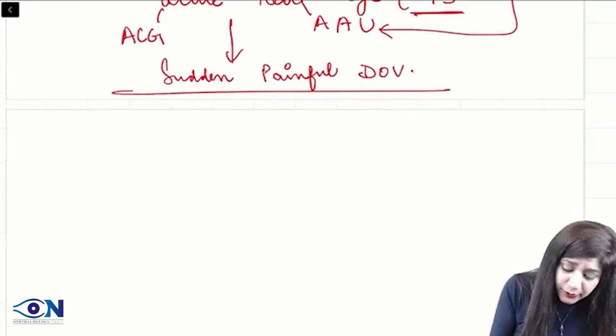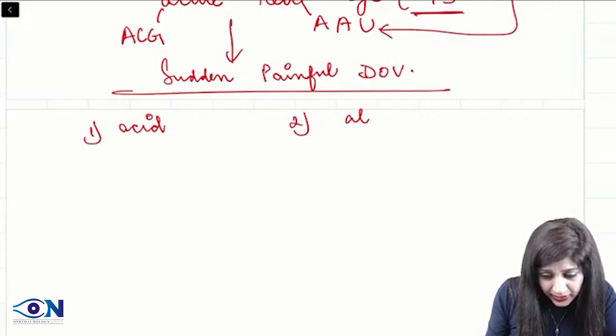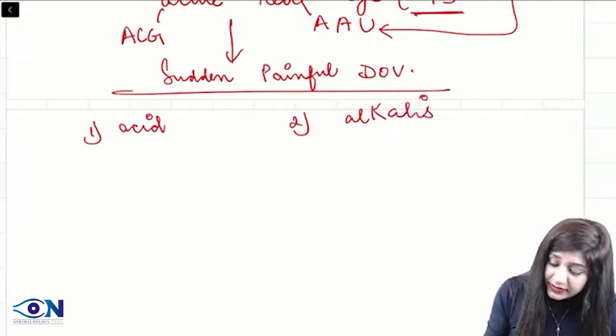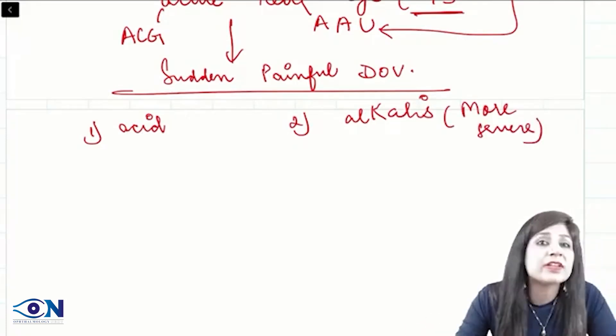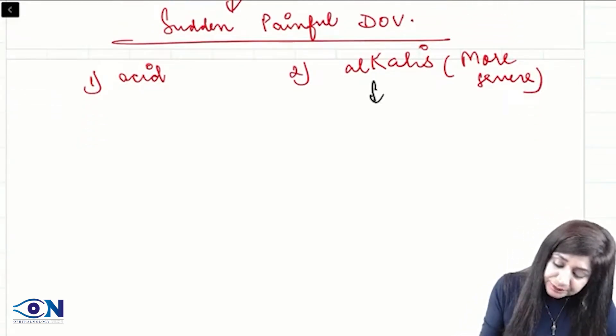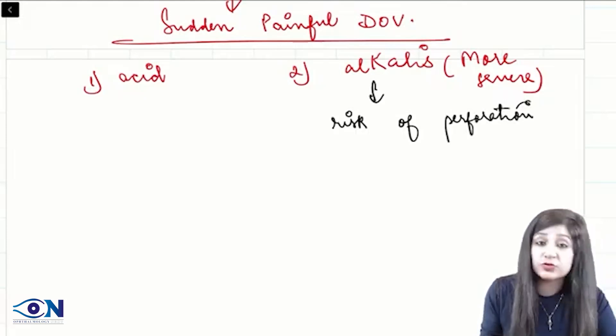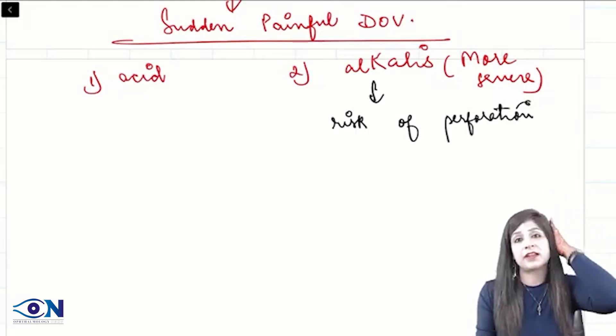It can be acid injuries or it can be alkalis. Alkali injury is actually more severe because we always have more risk of perforation. That is why alkali injuries are more severe in comparison to acid injury.